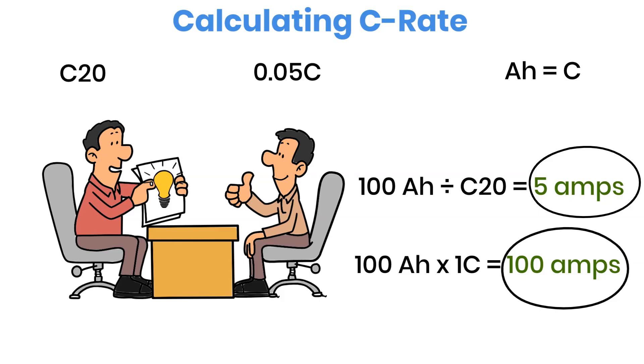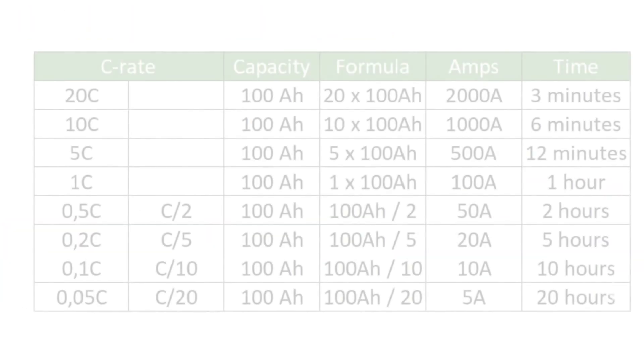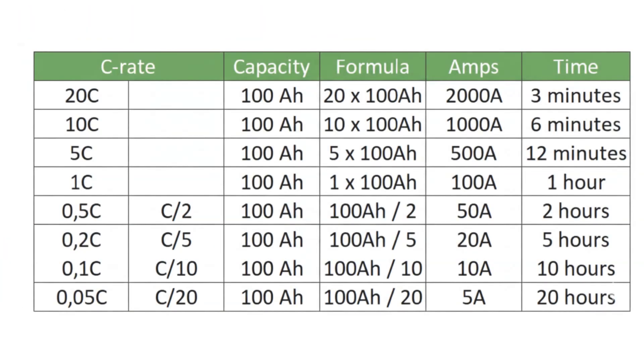To help clear things up further, most charts show C-rate in both styles. For example, C20 and 0.05C. When the number is written before the C, like 5C, you multiply it by the battery's capacity. When the number comes after the C, like C20, you divide the capacity by that number.